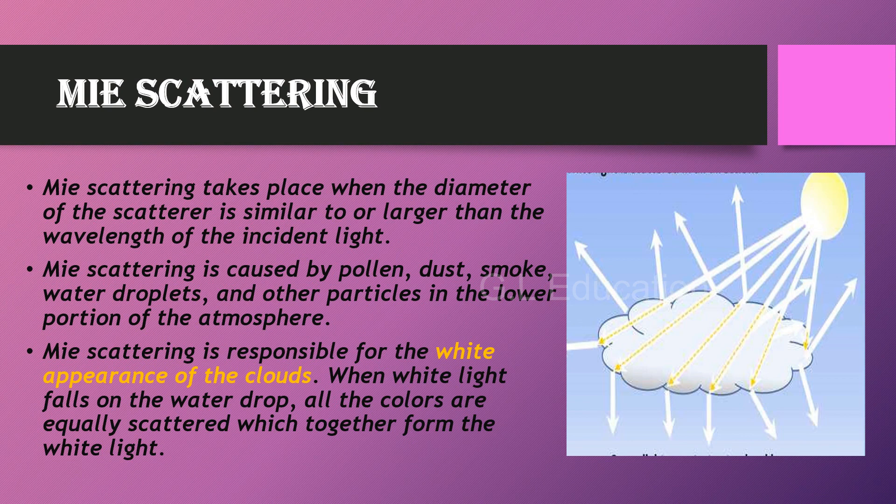When white light falls on a water droplet, all the colors are equally scattered, which together form white light. This explains why clouds appear white.